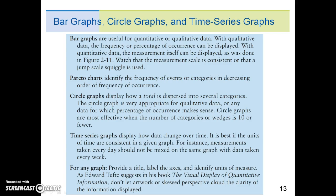Here are a summary of the graphs and procedures we have covered in this section. Bar graphs are useful for quantitative or qualitative data. With qualitative data, the frequency or percentage of occurrence can be displayed. With quantitative data, the measurement itself can be displayed as was done in Figure 2.11. Watch that the measurement scale is consistent or that a jump scale squiggle is used. Pareto charts identify the frequency of events or categories in decreasing order of frequency of occurrence.